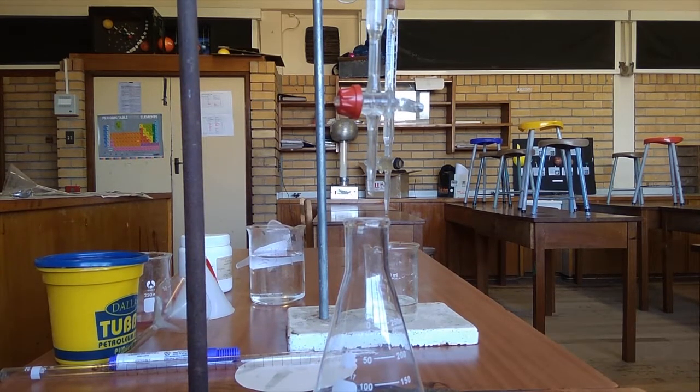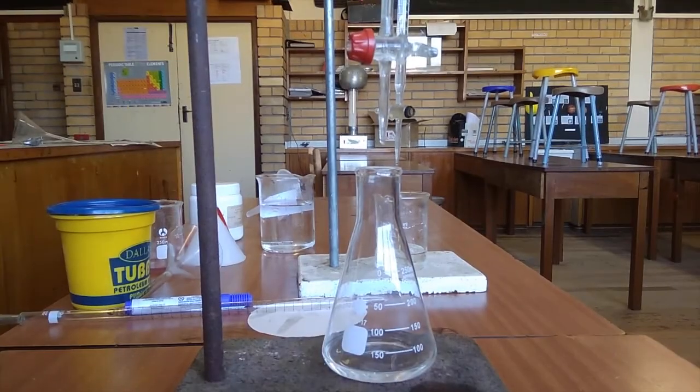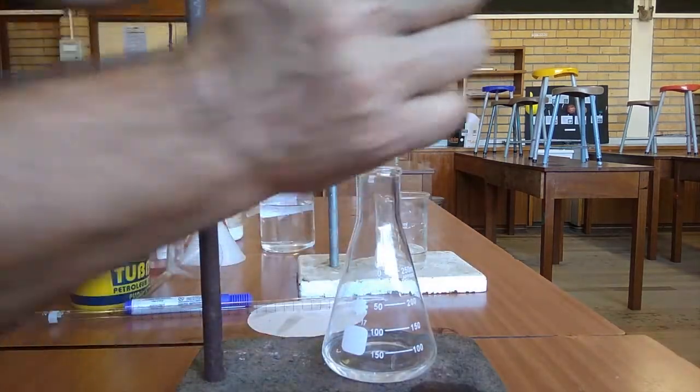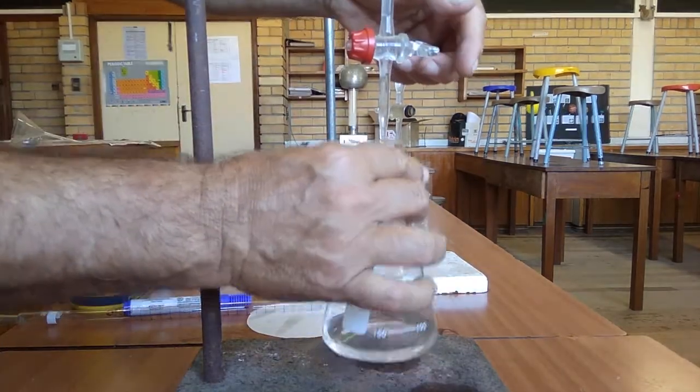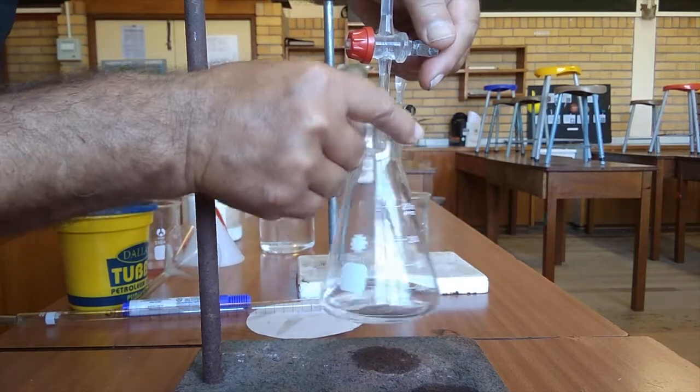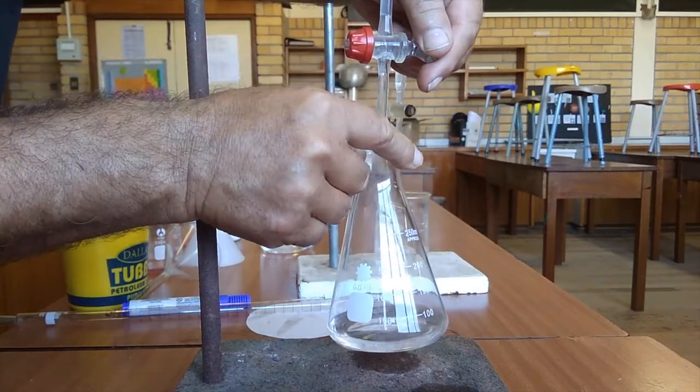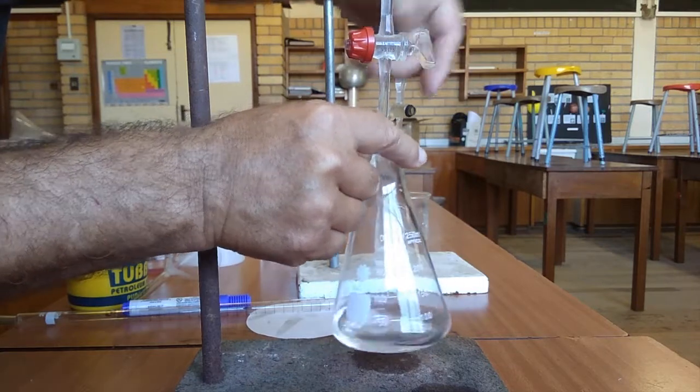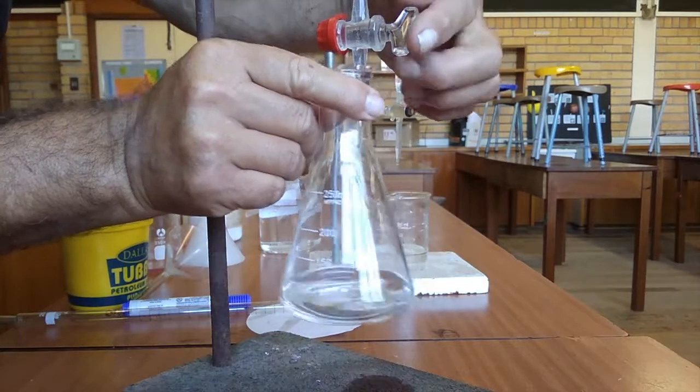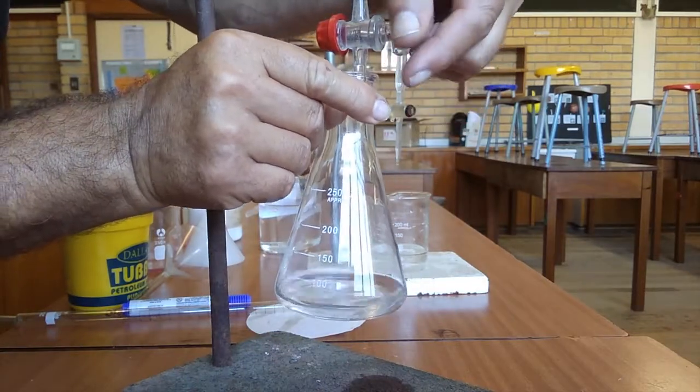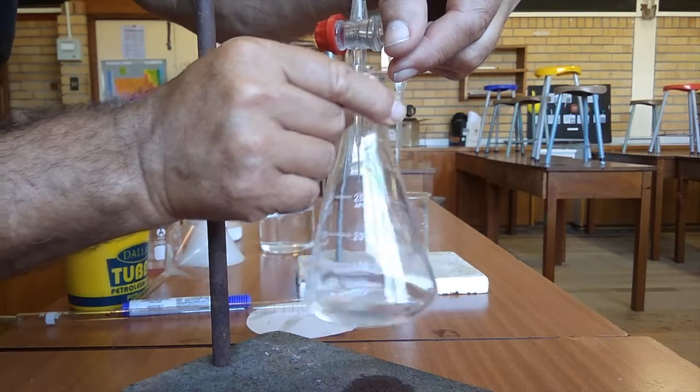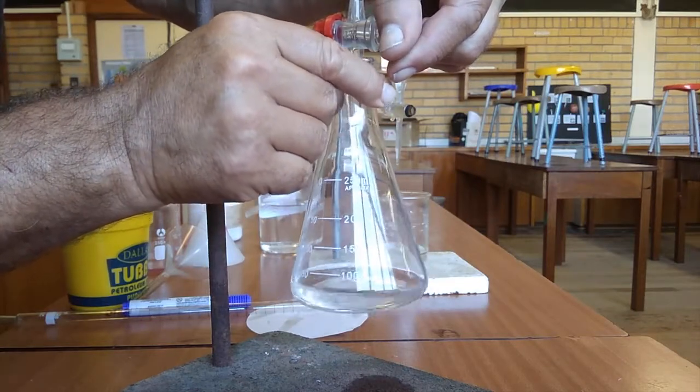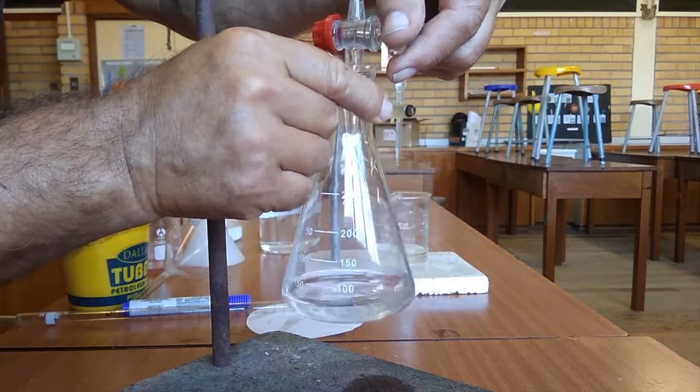Now we are going to slowly open the tap and allow sodium hydroxide to come in. Watch what happens. We're adding sodium hydroxide and we stir or swing the flask around. We're going to add sodium hydroxide until there's a color change.